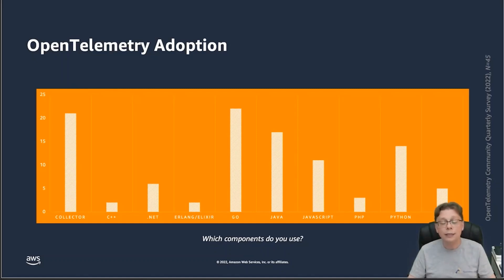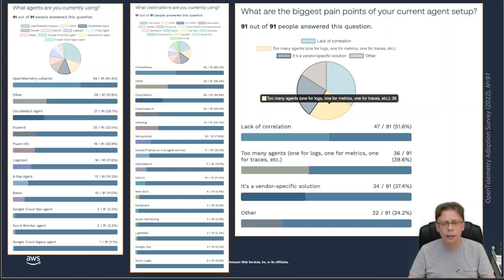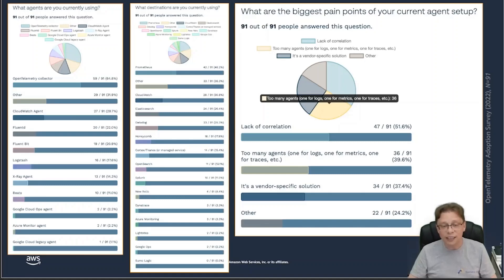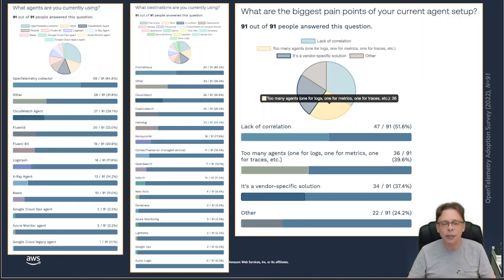Moving on to a second survey that I ran, asking people to provide their feedback. The first question asked what agents are currently being used. I was a little surprised to see already quite a good share — two-thirds — saying they are using the OpenTelemetry Collector, though there might be selection bias. In terms of backend destinations where signals are sent, Prometheus is clearly leading the pack, followed by CloudWatch and Elasticsearch.